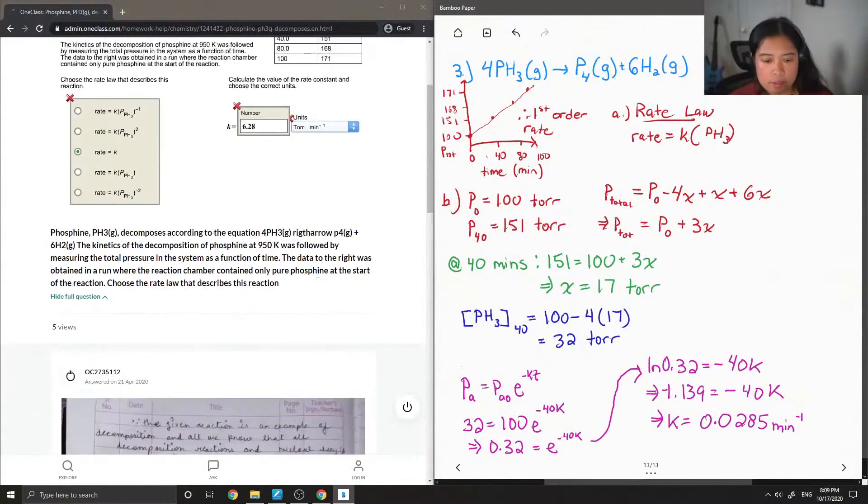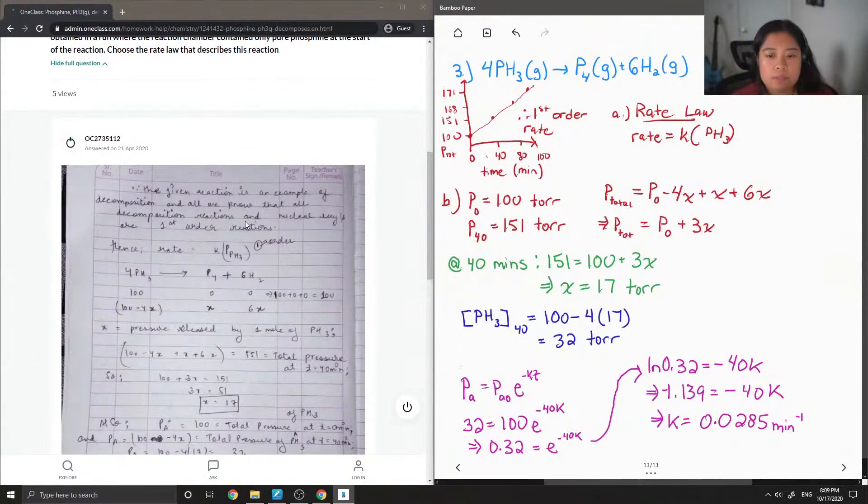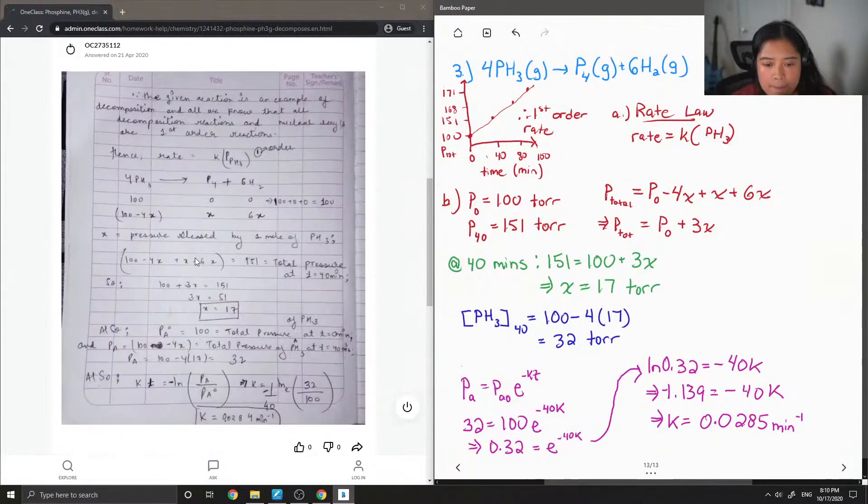Let's see the answer that the tutor said. So the given reaction is an example of decomposition, and they prove that all decomposition reactions and nuclear decays are first-order reactions. So that part is right. And then they do the same kind of unknown pressure thing that I did as well. They got x is equal to 17. Okay, so they calculated for the pressure, the total pressure of phosphine at t equals 40 minutes is equal to 100 minus 4 times 17. So they got 32 torr, and then they solved for k.